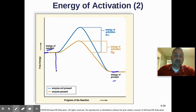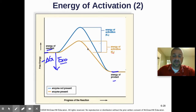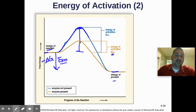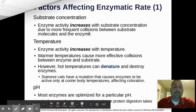On the graph, the reactants are up high and the products are down low, so delta G is negative — this is an exothermic or exergonic reaction. The blue line shows the normal activation energy needed, while the enzyme lowers it almost in half. This means the reaction can take place much faster with the enzyme present.